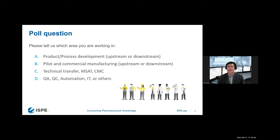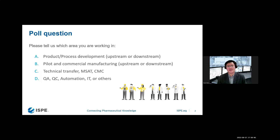There are many classifications of biopharma activities. Some people classify as upstream, downstream, fill and finish. Some classify as product development, process development, or production. And of course QA, QC, automation, IT are also important, as well as technical transfer, manufacturing science, and so on.